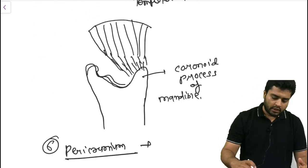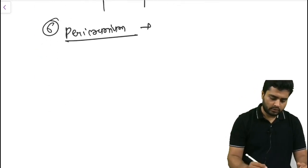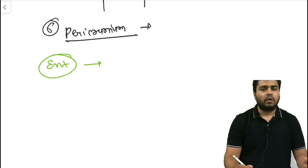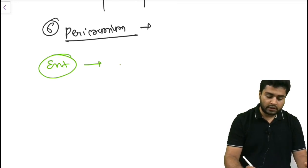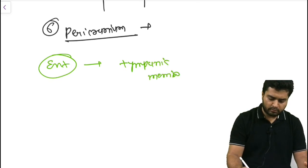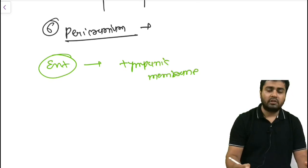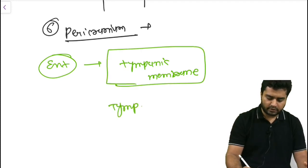This is important because in ENT, the temporal fascia is used in one surgery to make the tympanic membrane. The surgery in which the temporal fascia is used to reconstruct the tympanic membrane is known as tympanoplasty.